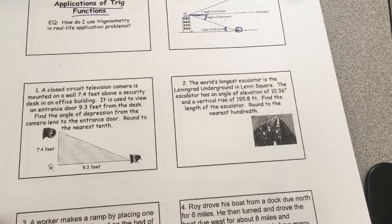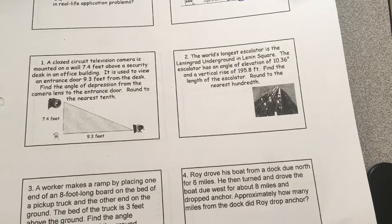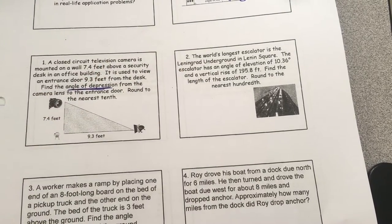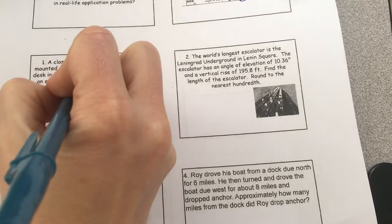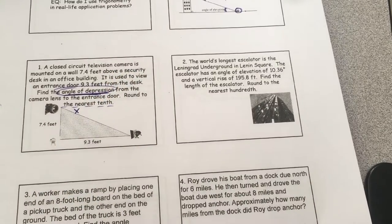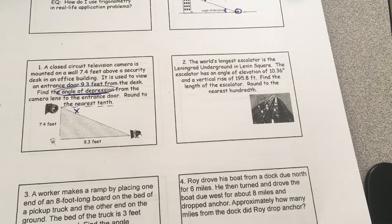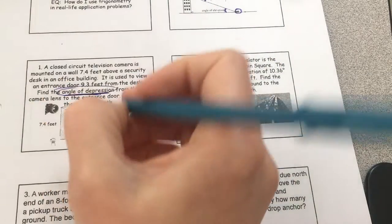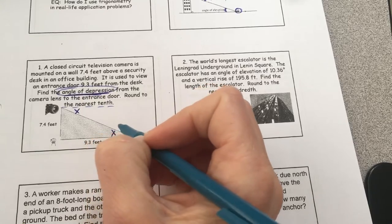Number one: a closed-circuit television camera is mounted on a wall. Find the angle of depression from the camera lens to the entrance door, rounded to the nearest tenth. The angle of depression is technically on the outside of the triangle, but because of alternate interior angles, we can move X inside the triangle to use SOHCAHTOA.